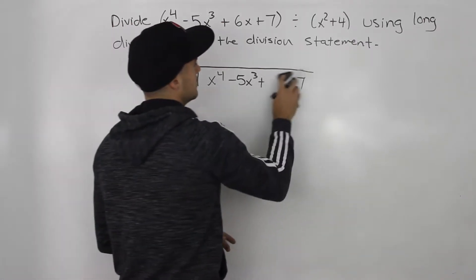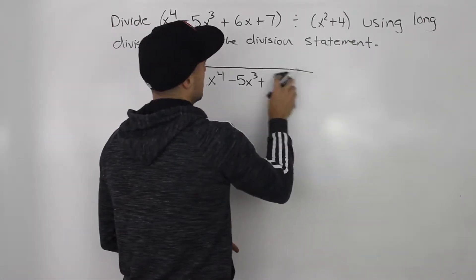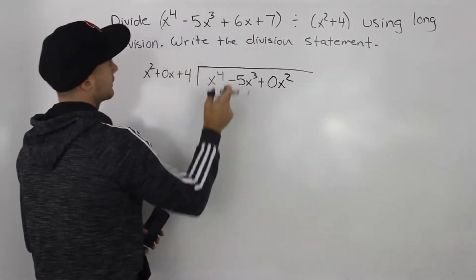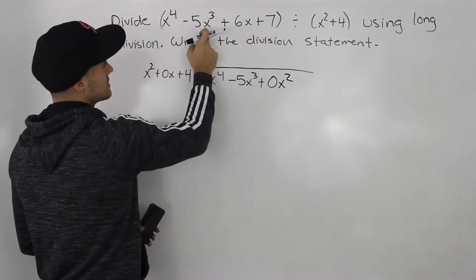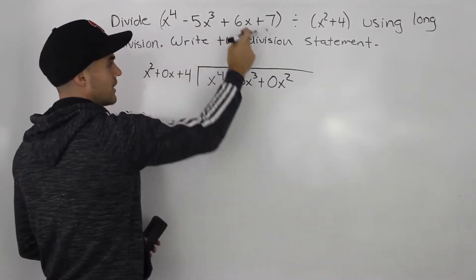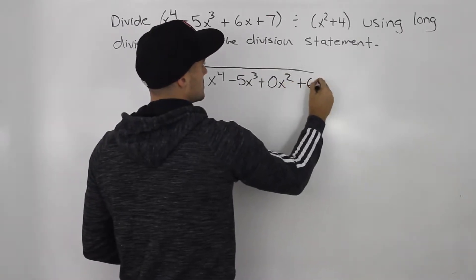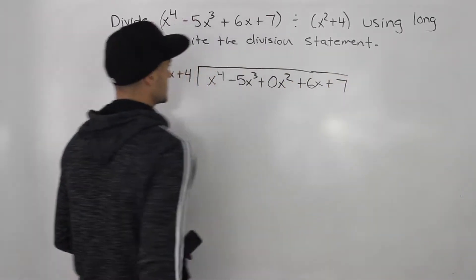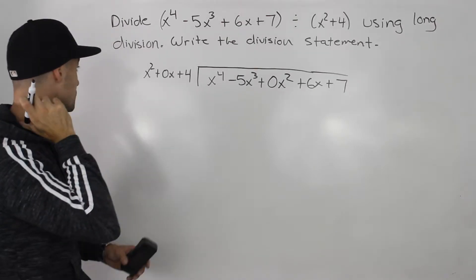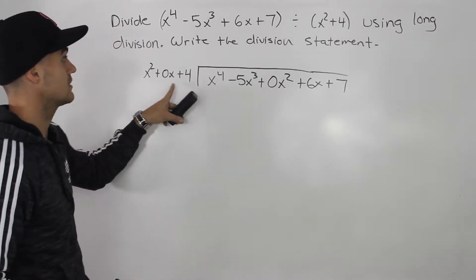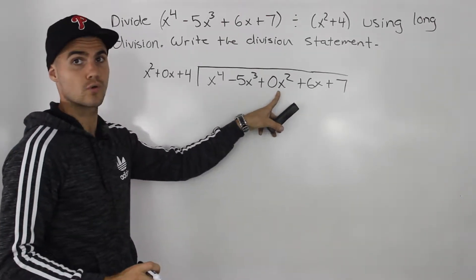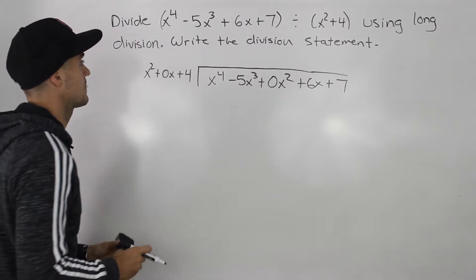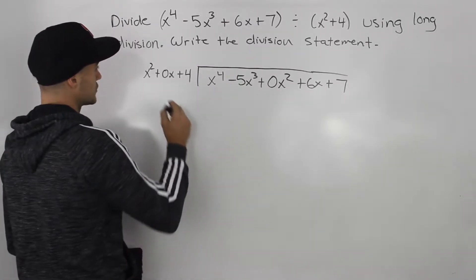Actually, no — sorry. Looking at the dividend, the x squared term is missing. It goes from x cubed to x, so we've got to put a placeholder for x squared. So we put a placeholder for the divisor, and we put a placeholder for the dividend. That's the first thing to take note of. And now we can do the long division.